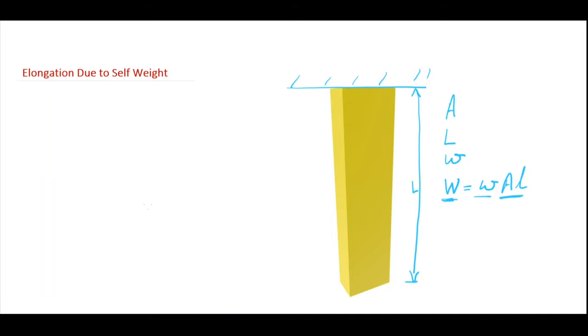So now in the figure you can see that this is the cross-section area A. On this bar there is no external force, so we consider only the effect of its own weight.